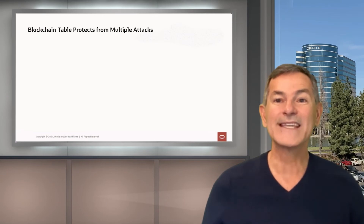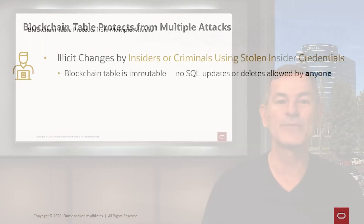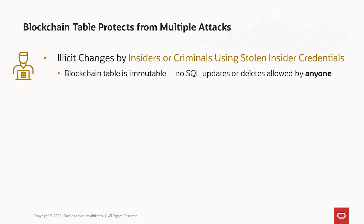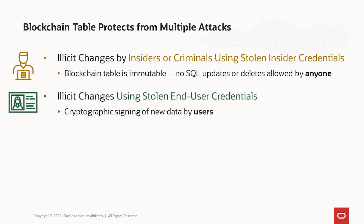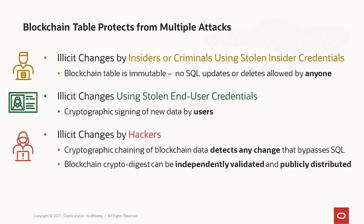Blockchain table protects from several different kinds of attacks. For example, it protects against illicit changes by insiders or criminals using stolen insider credentials because the blockchain table is immutable — there are no SQL updates or deletes allowed by anyone. It protects against changes made using stolen end-user credentials because it allows cryptographic signing of new data by users. And it protects against illicit changes by hackers because the cryptographic chaining of blockchain data detects any change that bypasses SQL, and the blockchain crypto digest can be independently validated and publicly distributed.